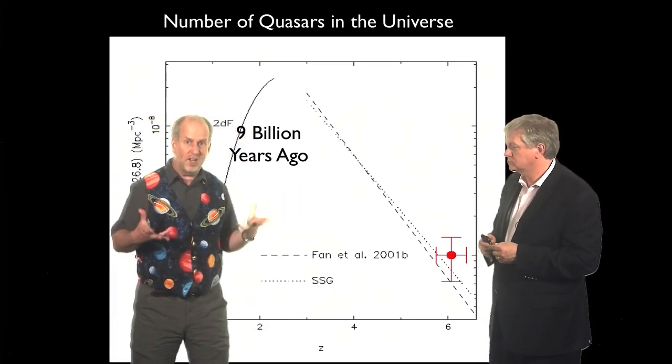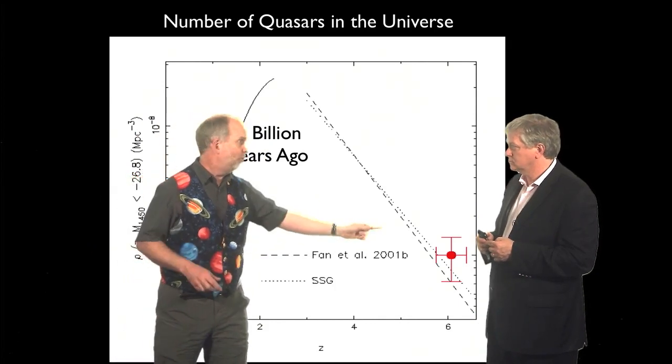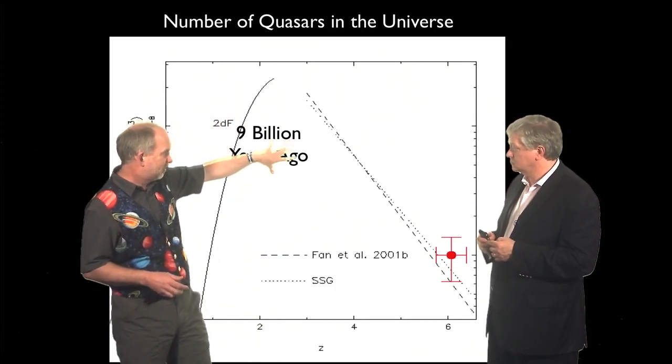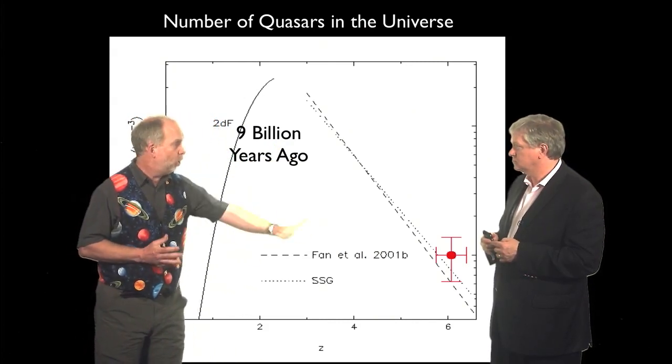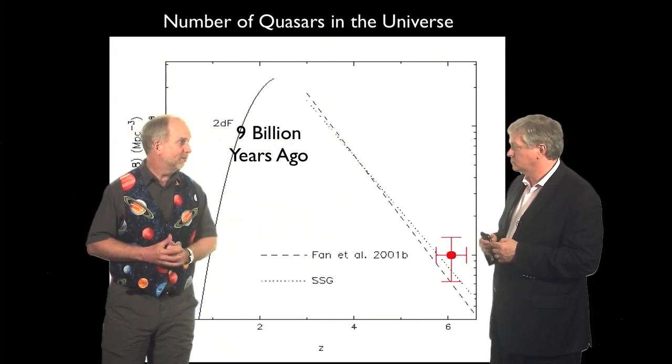So something must have re-ionized most of the gas of the universe before the age of the quasars. This is the age of the quasars, about 10 billion light years ago, before that. So that means quasars can't really do this. There just weren't enough of them early enough. They came along too late.